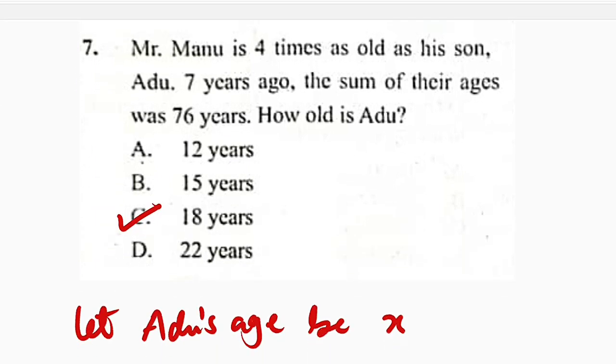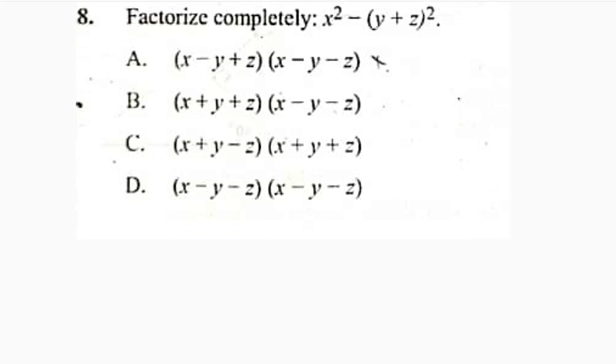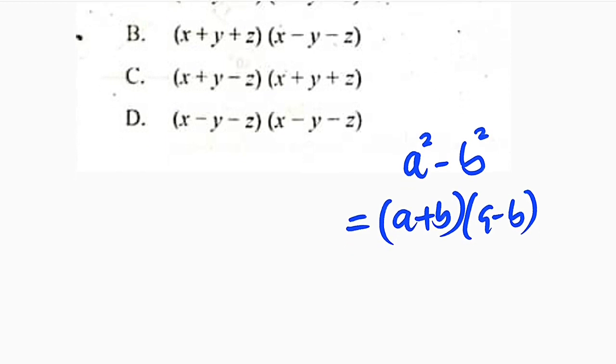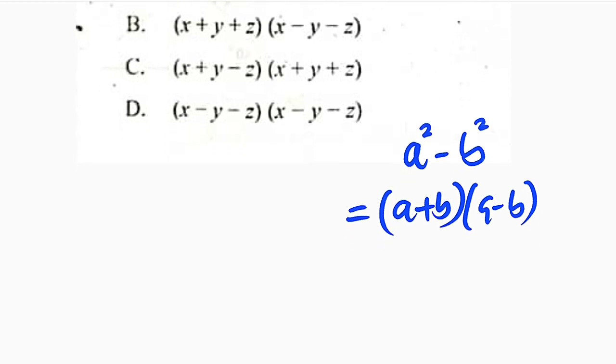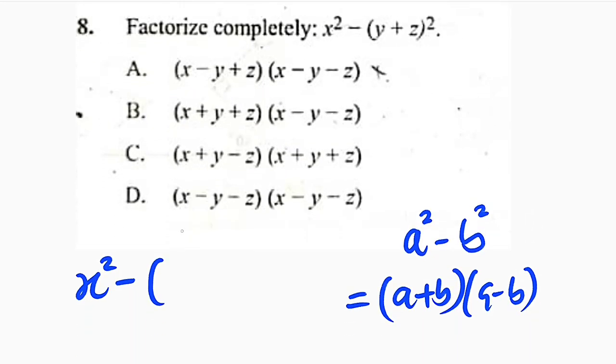Now let us move on to question number 8. Question 8. We are asked to factorize completely. Let me remind you something. This is very simple. Difference of two squares. If you have a squared minus b squared, this is the same thing as a plus b multiplied by a minus b. So since we are given something of this kind where our a is x and b is y plus z,